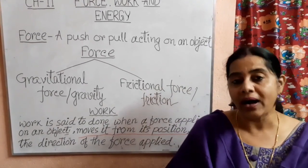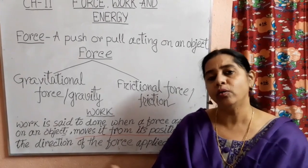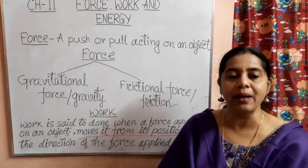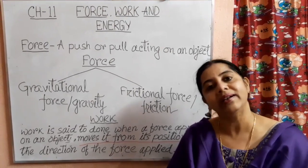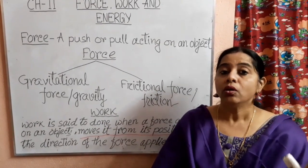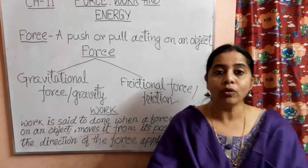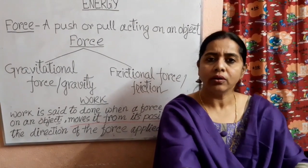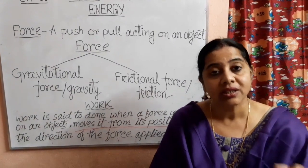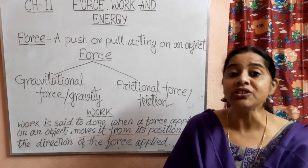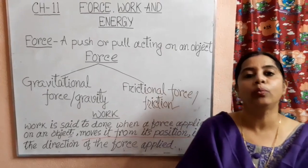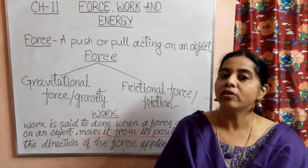Let me explain. Suppose you are pushing a chair. You have the capacity to push a chair and you make it move some distance in your house. Work is said to be done there. The chair moves in the direction towards which you apply the force. Suppose you are pushing the chair from this side — the chair moves forward, not backward. So when you apply force to an object and the object starts moving in the direction you apply the force, then work is said to be done.